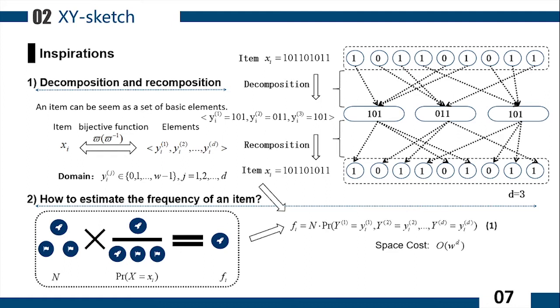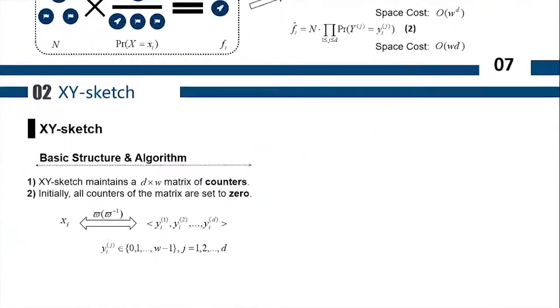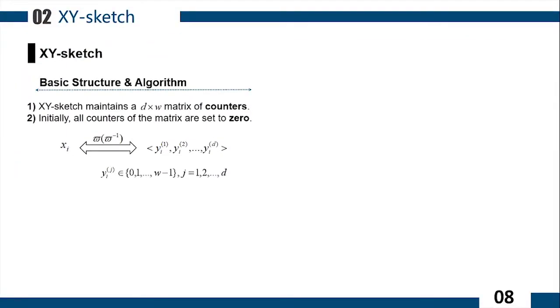Based on these two inspirations, we get equation 1 to figure out the frequency of the item. But unfortunately, the space complexity of this method is very large, which is unaffordable. To this end, we reduce the space overhead by sacrificing accuracy using equation 2. In this way, the space complexity is reduced to WD. That's the key point of XY-Sketch.